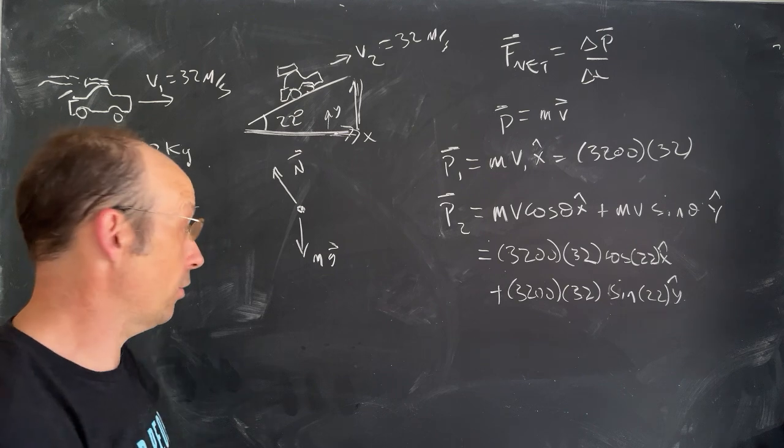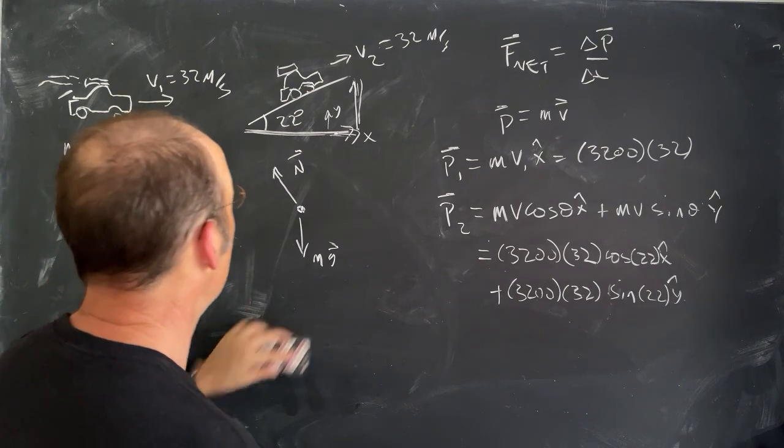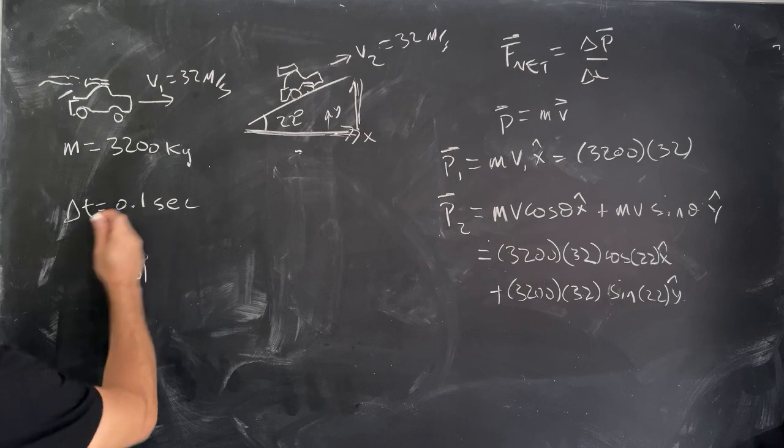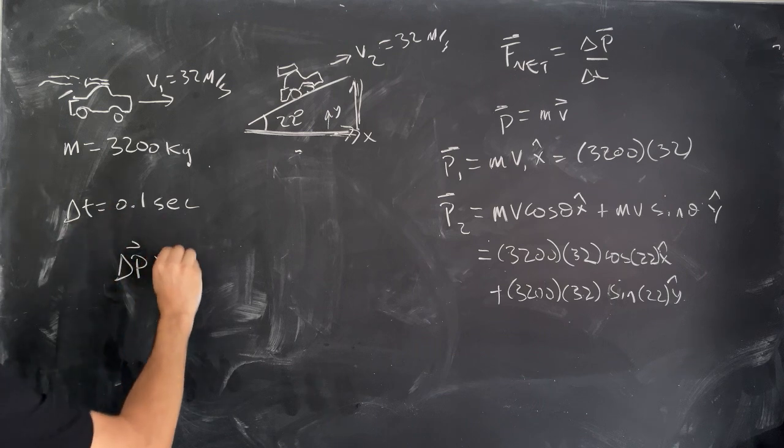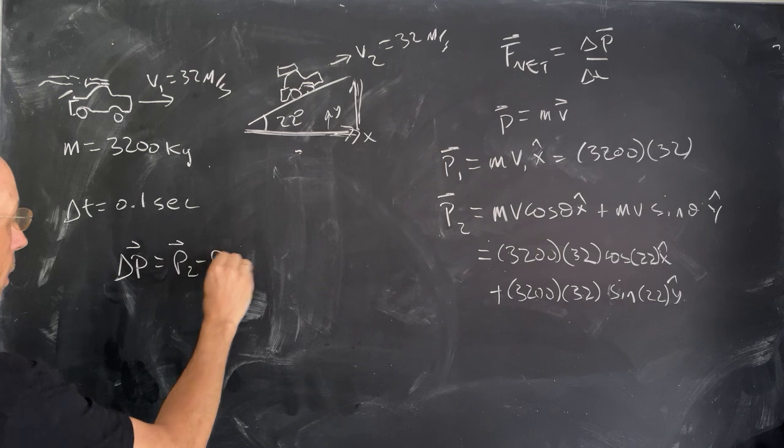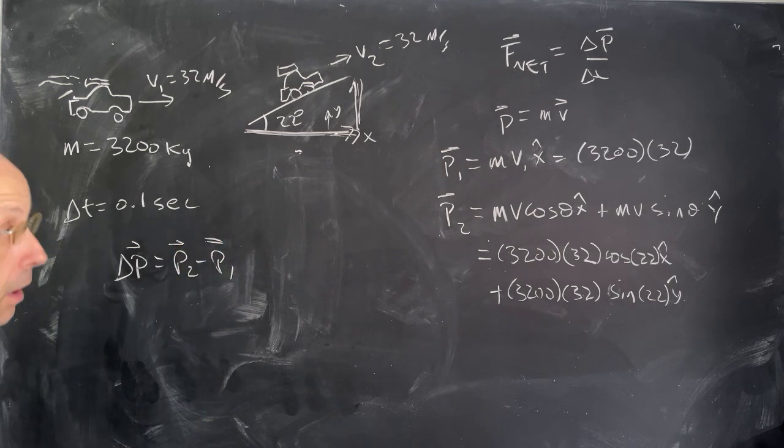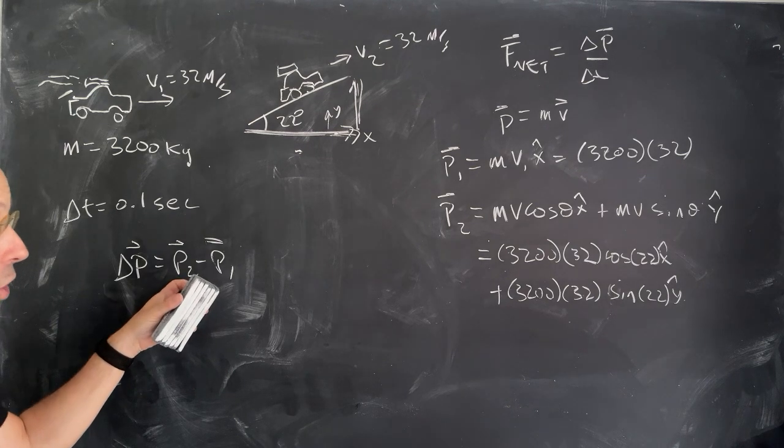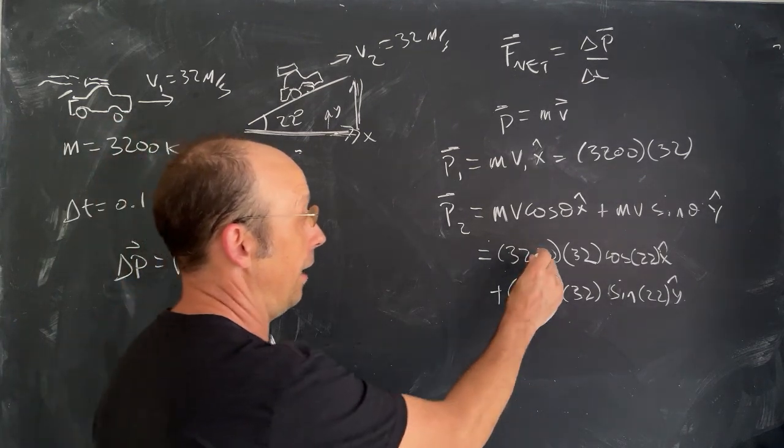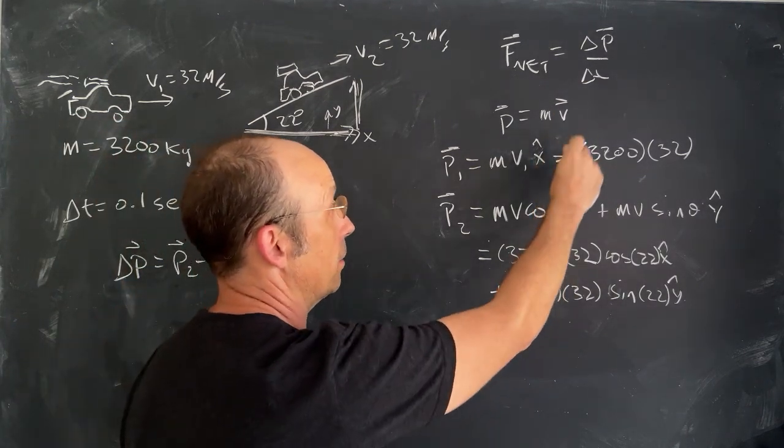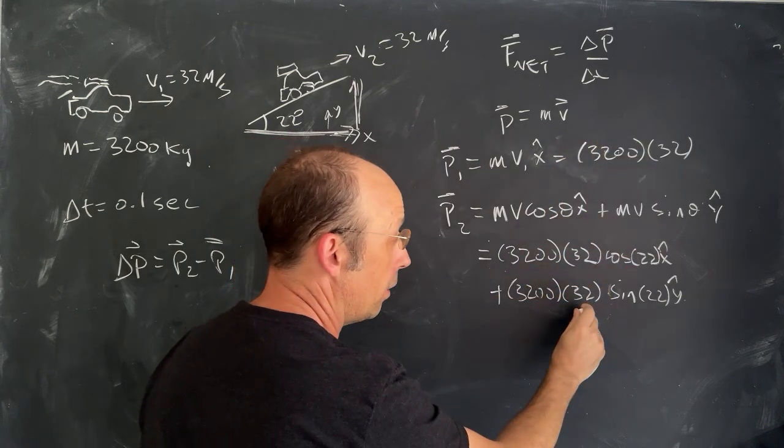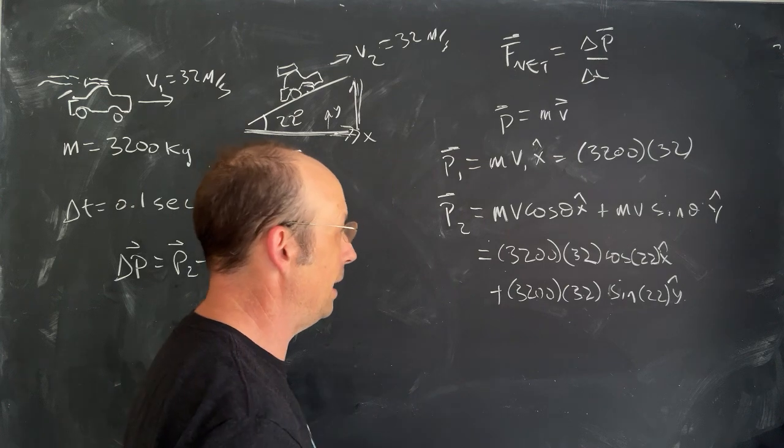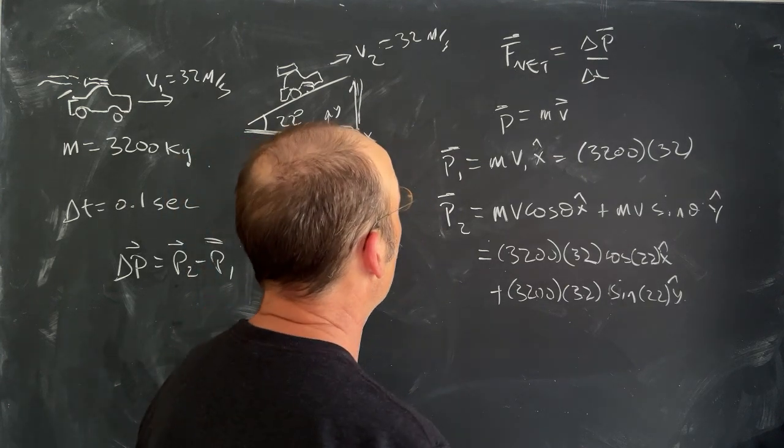Let's go ahead and put in my numbers. I'm not going to factor it out. So, 3,200 times 32 times cosine of 22 x-hat plus 3,200 times 32 sine of 22 y-hat. Now that I have P1 and P2 as a vector, I can find delta P. So, that's what I want to find next. Delta P is P2 minus P1. So, it's the change in momentum. Let me write these two as numbers, and then we can say P2, to do a subtraction, I'm just going to take the x component of P2 minus the x component of P1. Y component of P2 minus the y component of P1, which is zero.